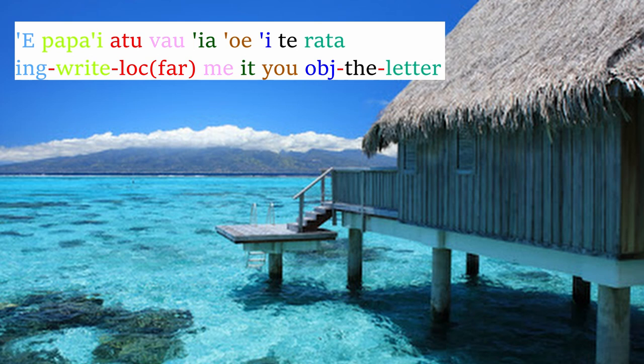Let's take a look at some sample sentences in Tahitian. E pa'ari atu vau ia oe i te rata. E here is the continuous form, pa'ari is 'to write,' atu is a locative form meaning something far away from the speaker, vau means 'me,' ia means 'it/he/she,' oe is 'you,' i is an object particle, te is 'the,' and rata is 'letter.' So this means: I am writing you a letter.